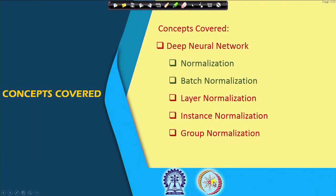Batch normalization improves the learning rate much more — you can train the neural network in very few iterations. In today's lecture we will talk about other normalization techniques: layer normalization, instance normalization, and group normalization.